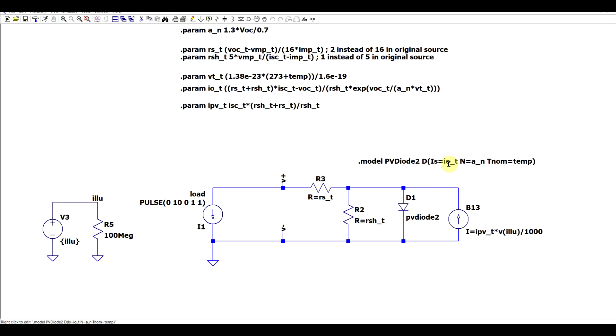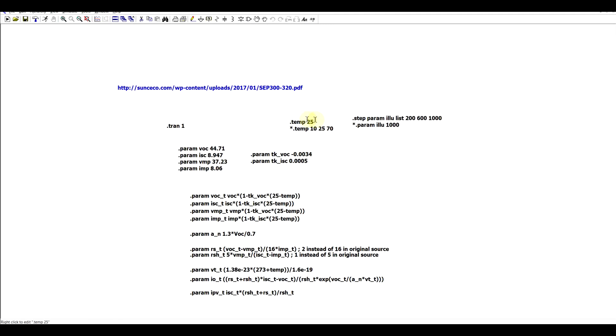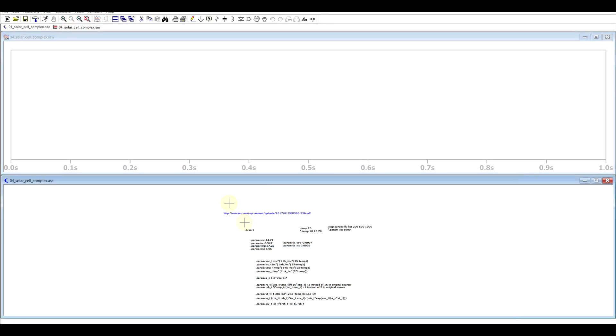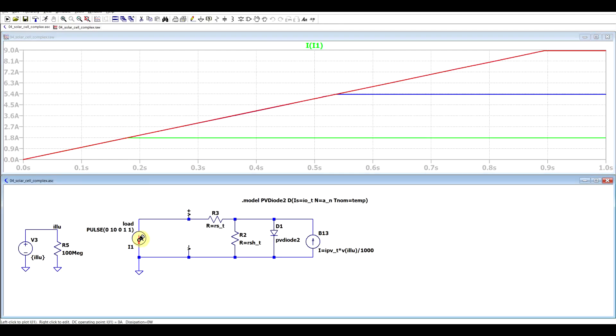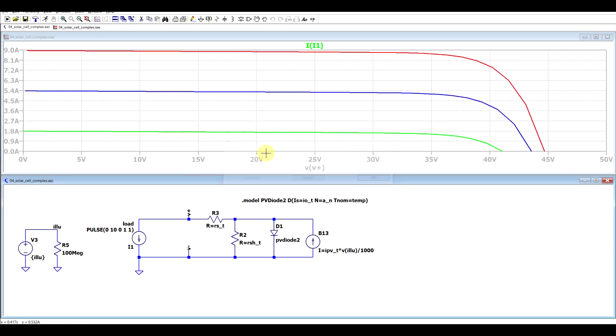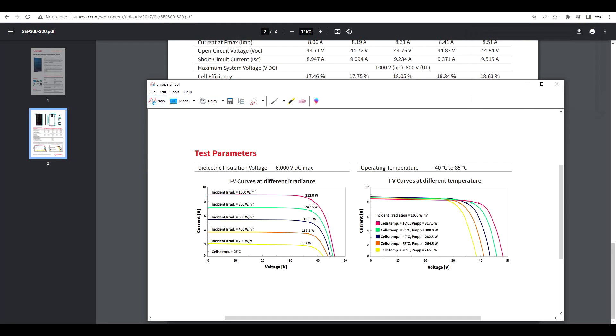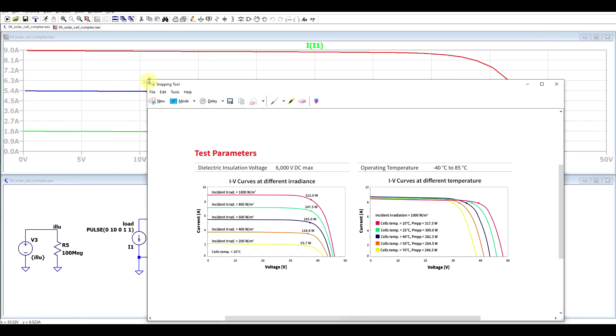The only way around this would be to redefine the diode model using some behavioral sources but with the standard diode model this will not work. So now I set a fixed temperature value and then I step the illumination just to see if the simulation model works. We can check the current running through the load and express this based on the output voltage and we get a nice curve. The nice thing about having a datasheet is that we can compare our simulation results to it.